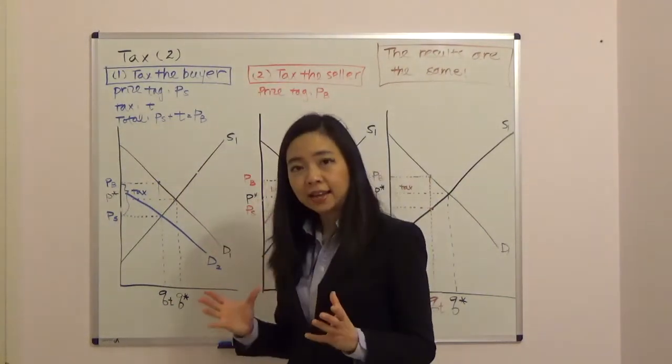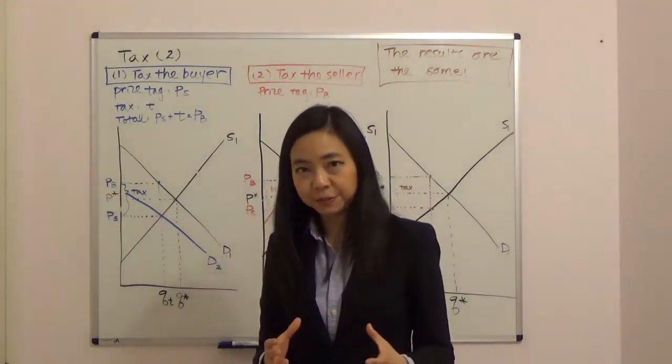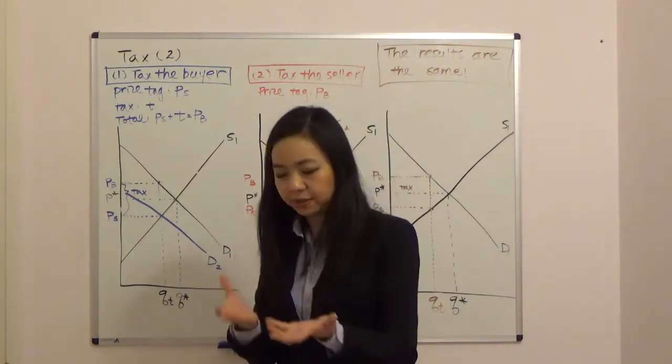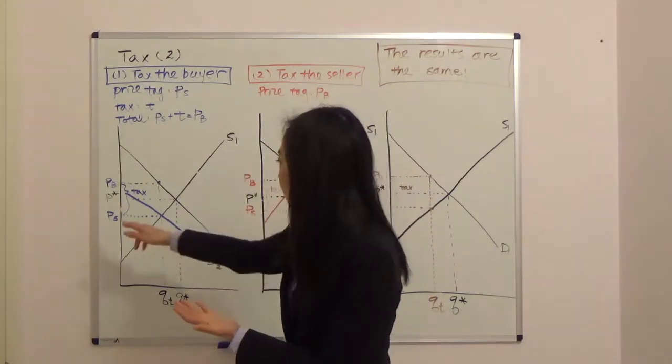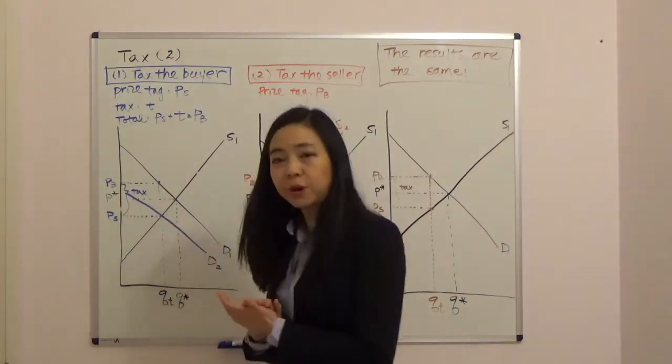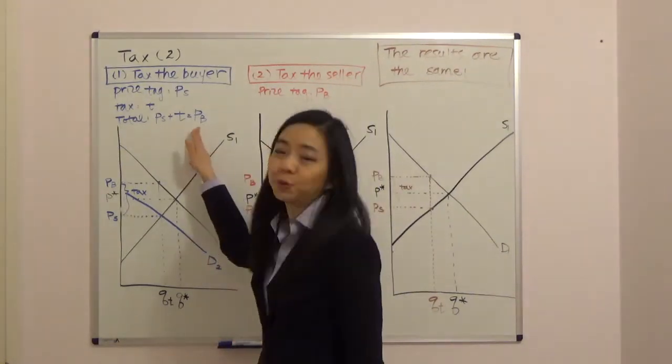So on the price tag, the buyer is going to see the price listed as PS. And then you bring this product to the cashier to pay for it. And the cashier is going to show you that the price of the product is PS plus tax. And your grand total will be PB.